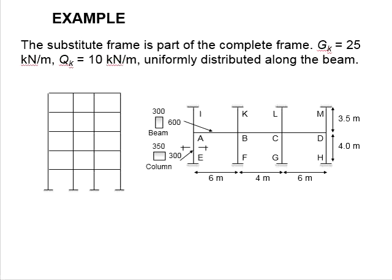Let's try an example to analyze a one-level subframe. This is a multi-story building and we are analyzing the subframe at the first floor. The Gk is 25 kilonewtons per meter, Qk is 10 kilonewtons per meter. The loads are acting uniformly distributed throughout the beam.